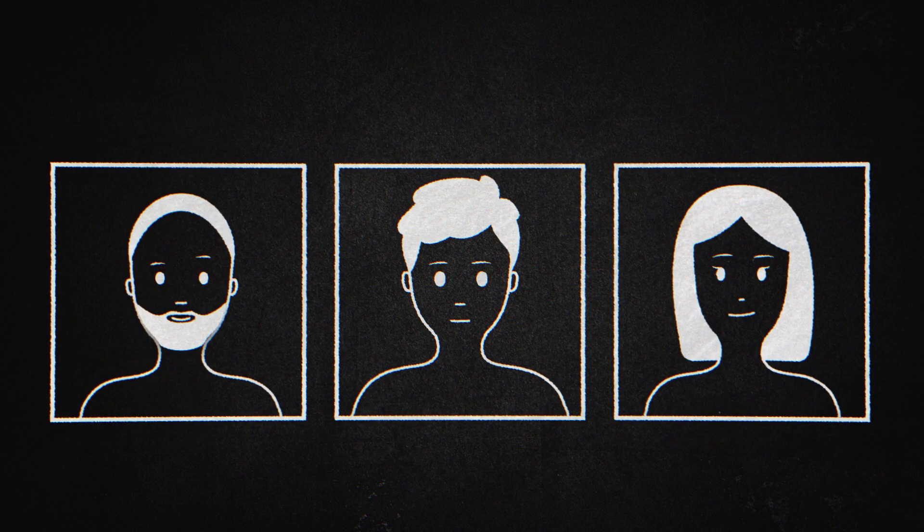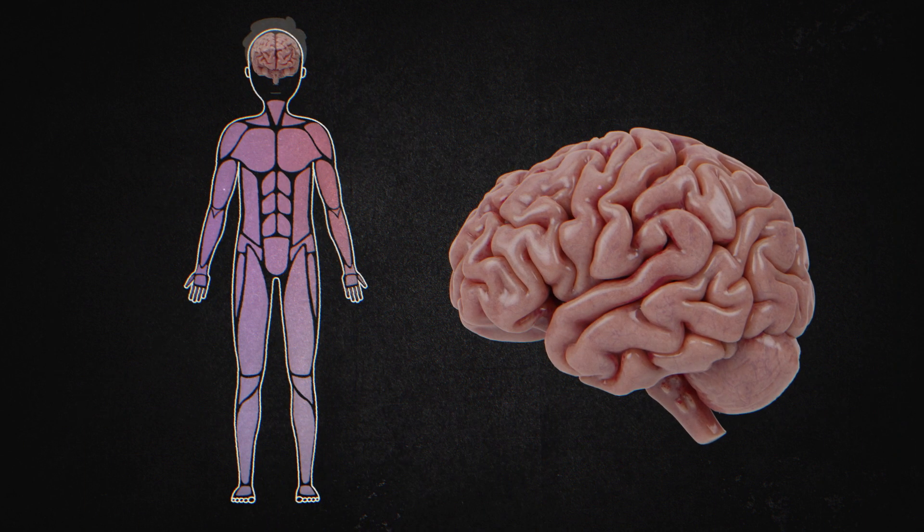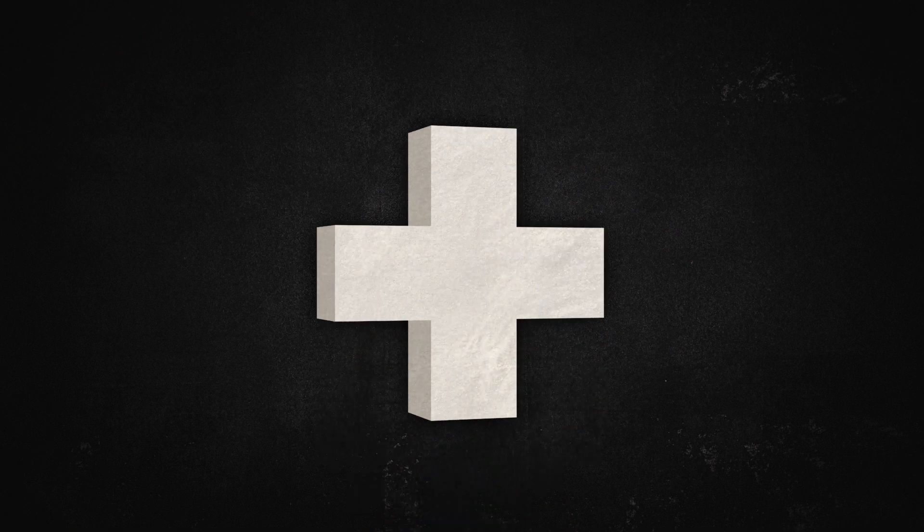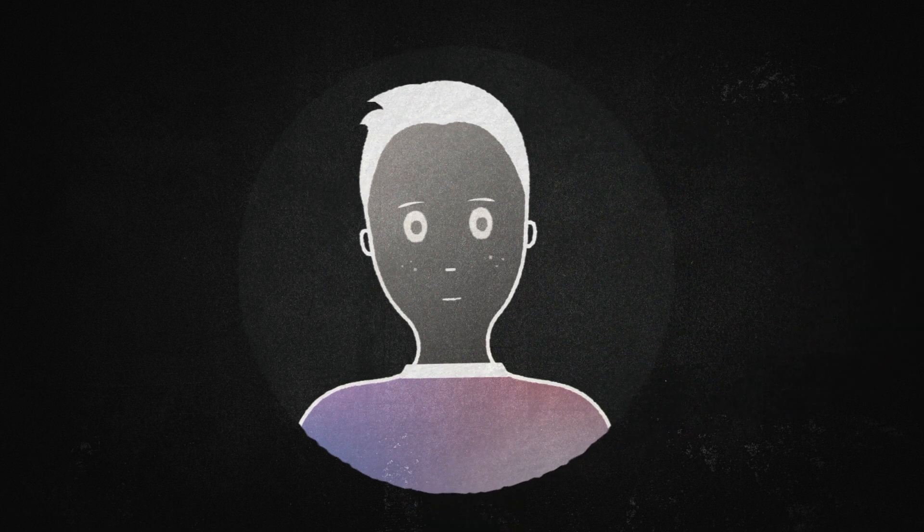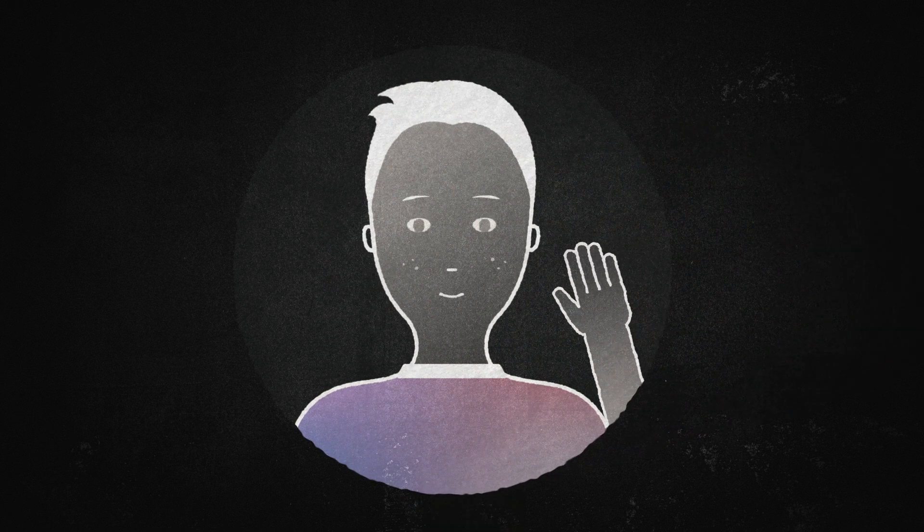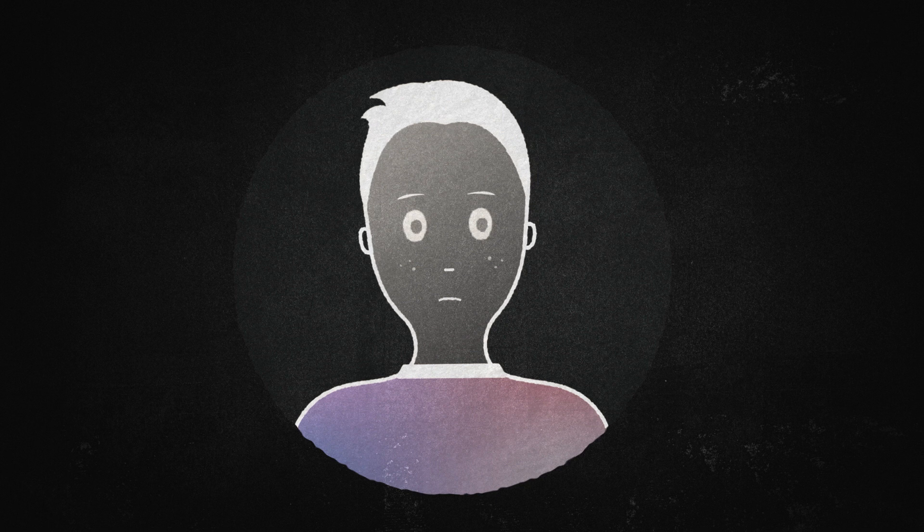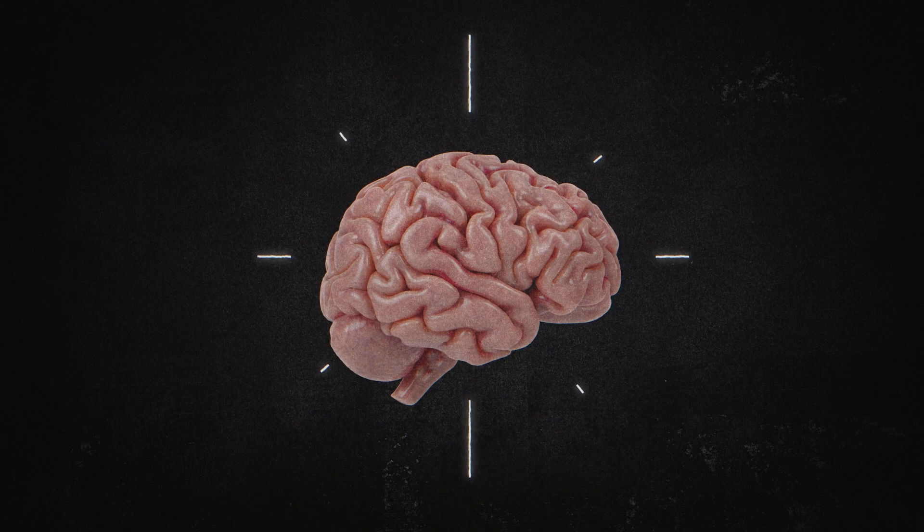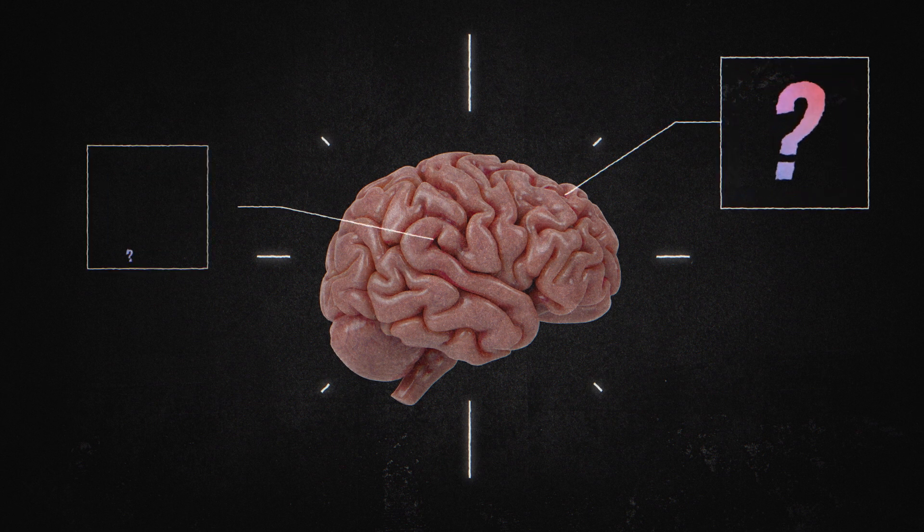As a first step, the research team has managed to assign specific motor functions to individual areas of the brain, down to the millimeter. We can see how medicine can benefit from this approach in the hypothetical example of Tim. Tim is scheduled to have a complicated brain surgery in a few days. To avoid damaging any vital areas during the operation, his brain will be precisely mapped beforehand.